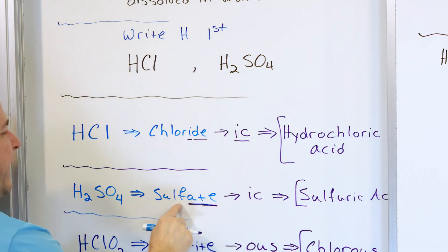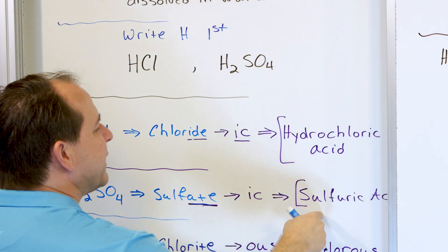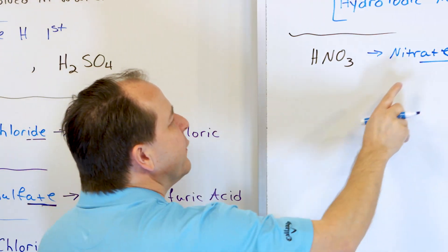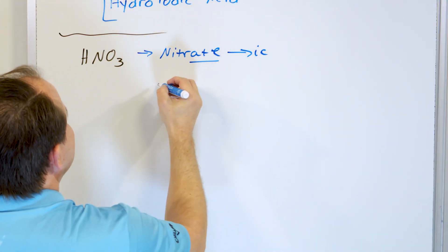Just like sulfate, the eight turns into IC, and it becomes sulfuric acid. So here the eight goes into IC, and it becomes nitric acid.